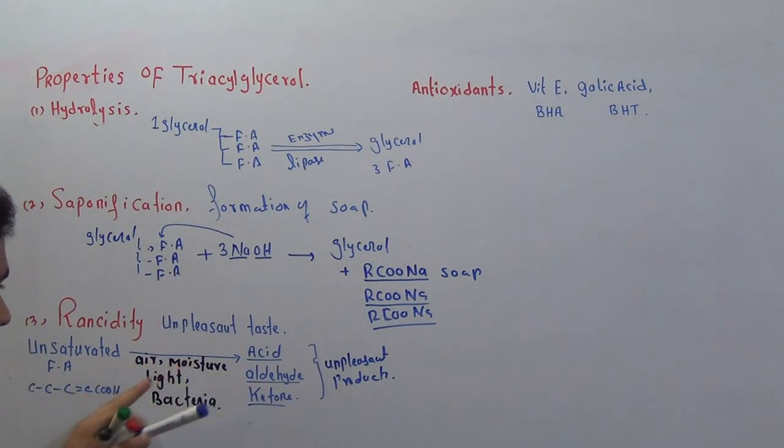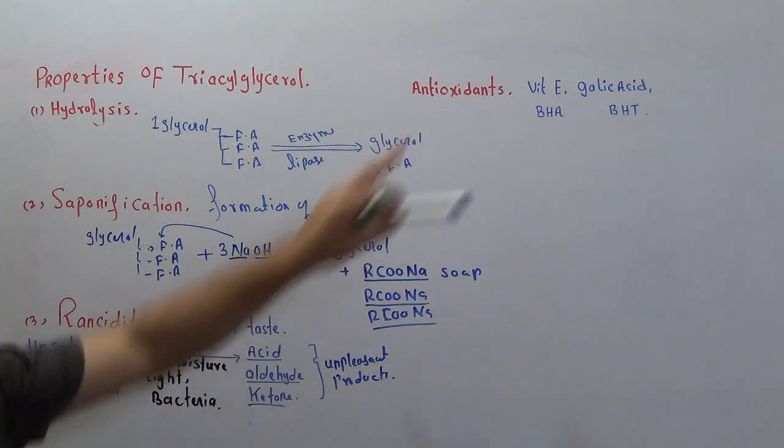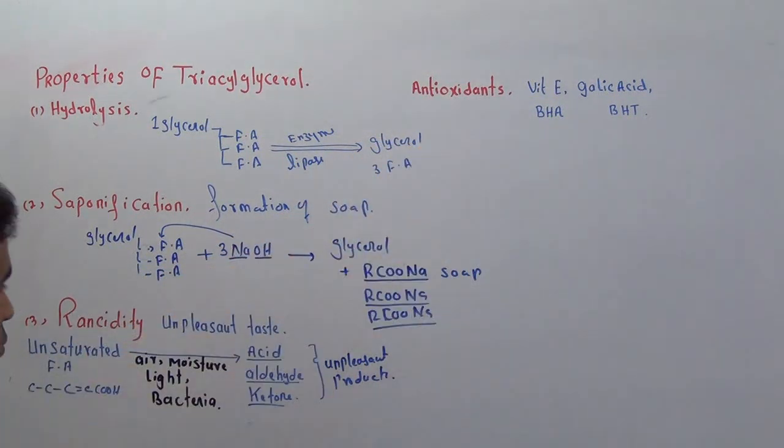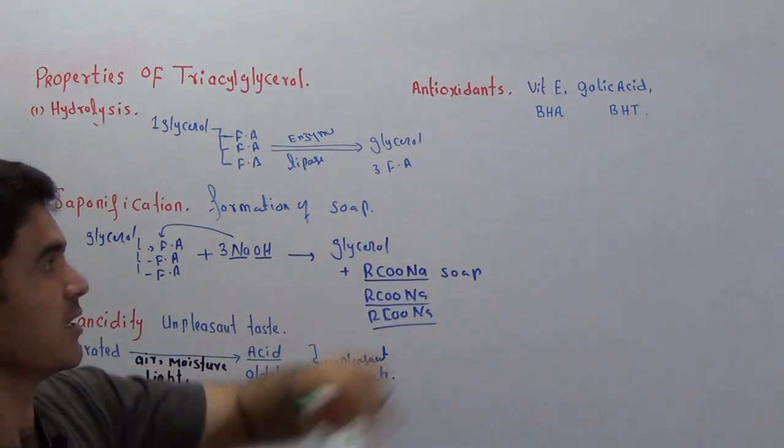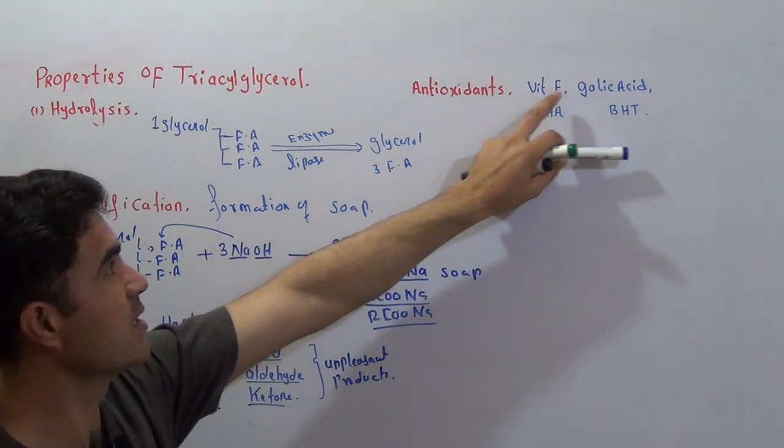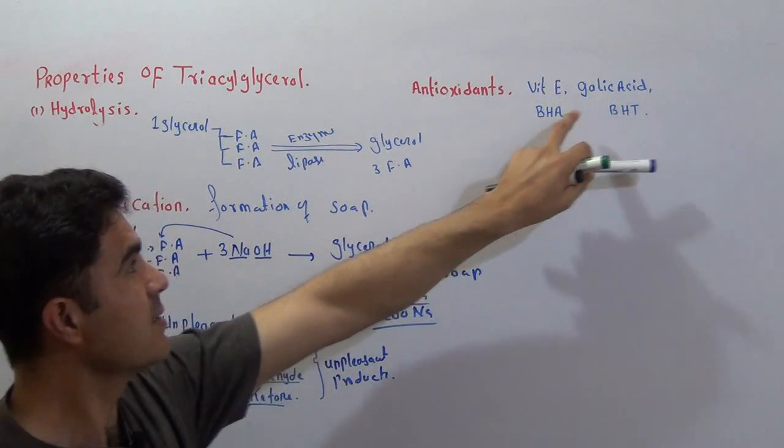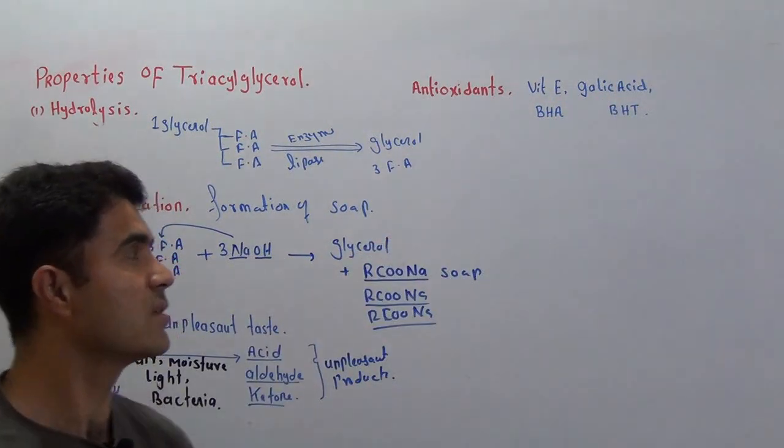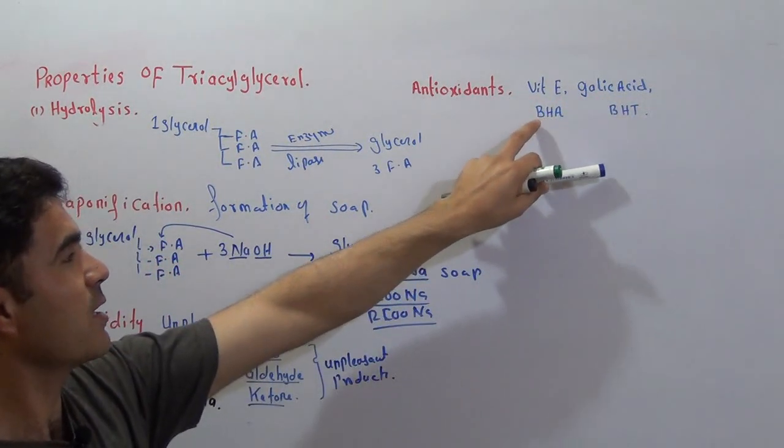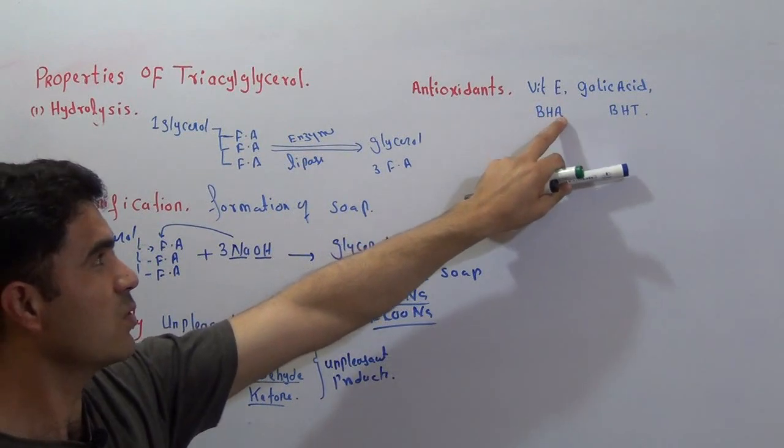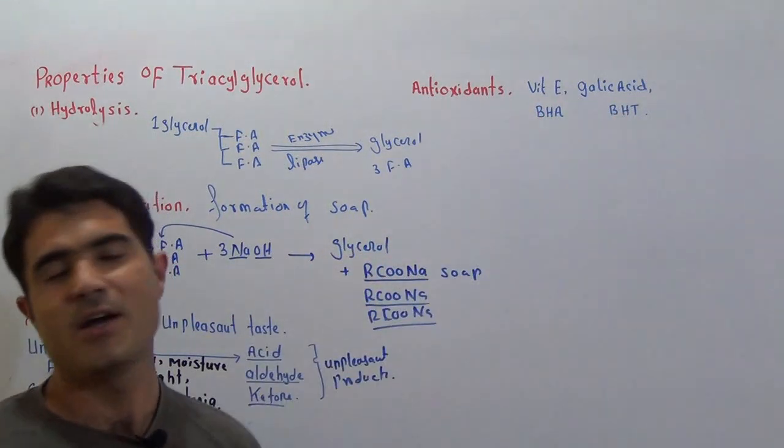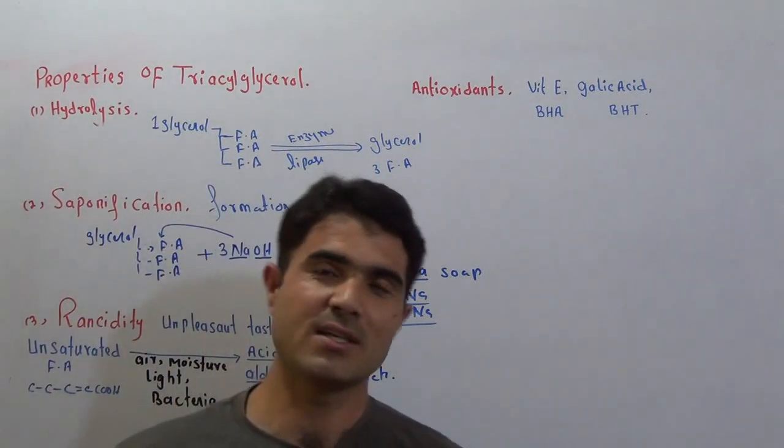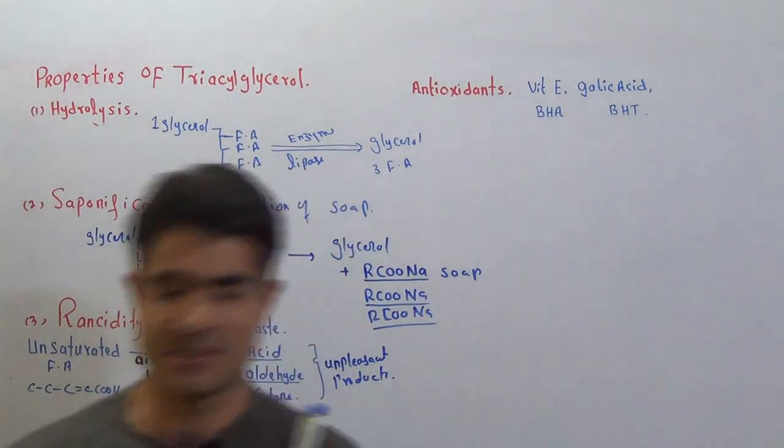If you want to protect it, protect it from air, moisture and light. The last point is antioxidants. If you want to prevent this process, you will add antioxidants - that is vitamin E, gallic acid, BHA, BHT. BHA stands for butylated hydroxyanisol. Thank you for watching the video.